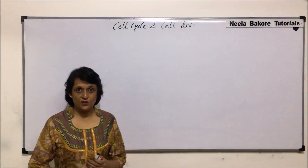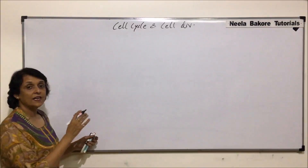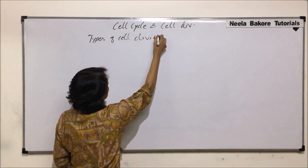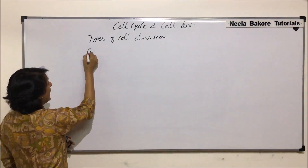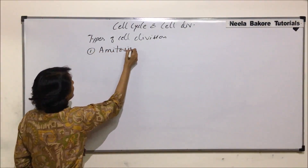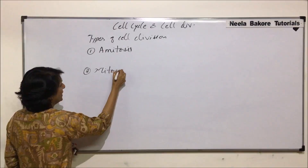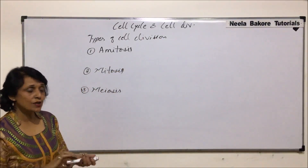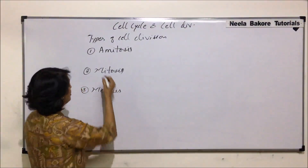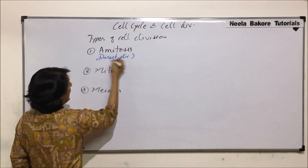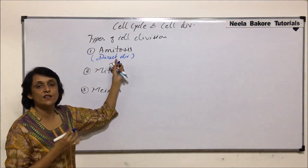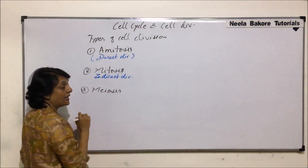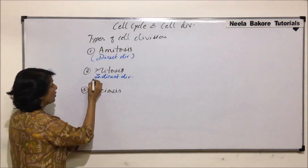Now let us start with the divisions. We have understood cell cycle, now we'll start with the types of divisions. There are three types: first amitosis, second mitosis, and third is meiosis. Amitosis is known as direct division, and once we understand how this division takes place, we realize why this 'direct' word is given. Mitosis is called indirect division and is also known as equational division.